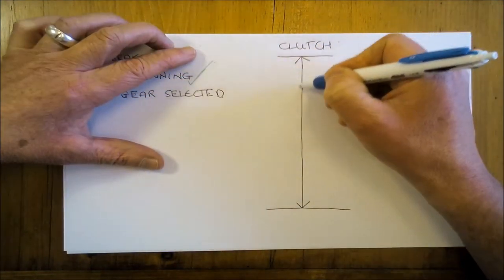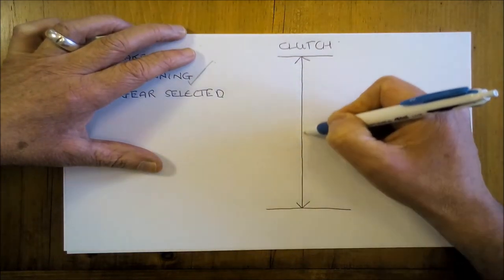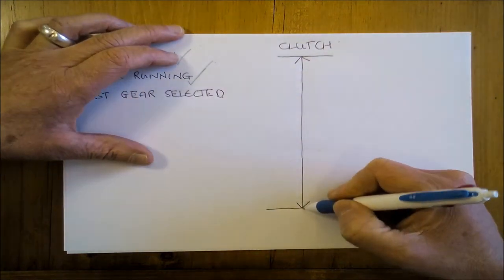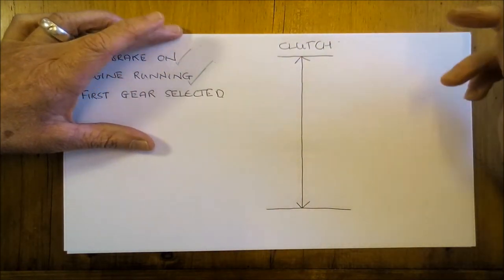So as you push the clutch down with your left foot and then you can take your foot off it again, the spring loading pushes it back up and you get to the top. Foot's going down and back up again on the clutch.